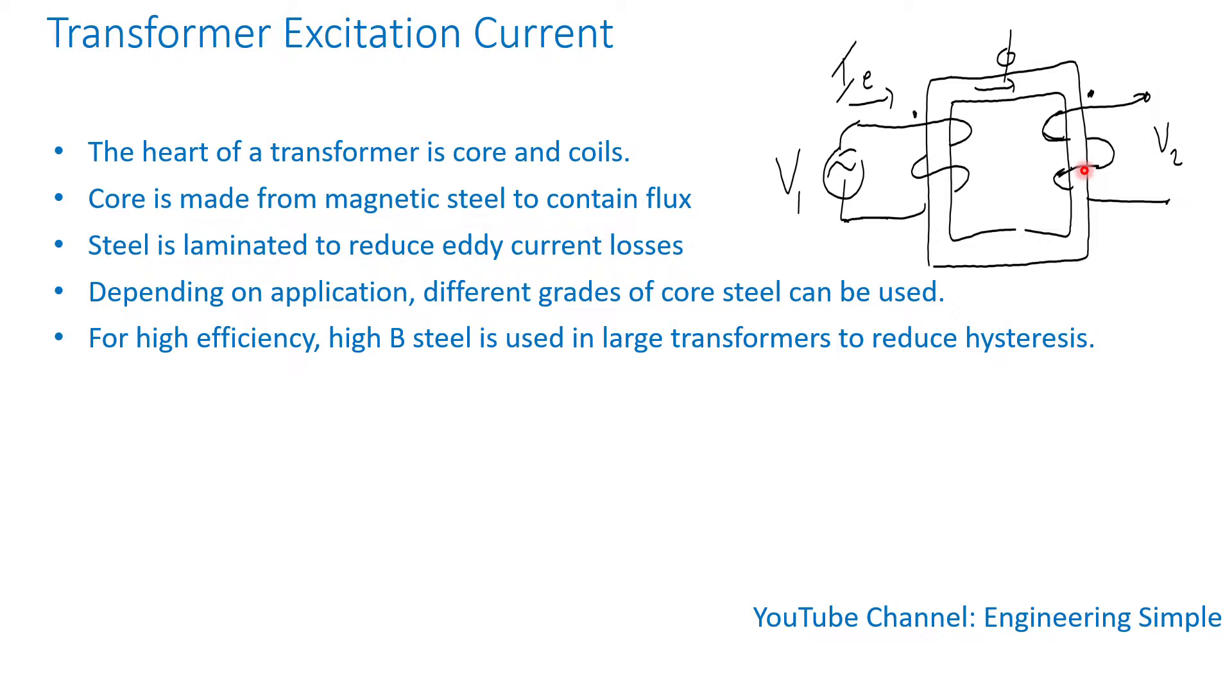High B, what's called high B steel, is used in large transformers to reduce hysteresis losses.